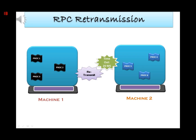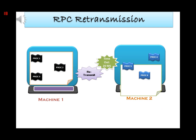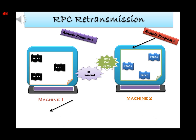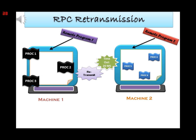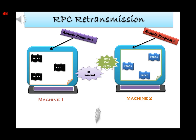Now let's discuss RPC retransmission. We will discuss retransmission strategy and the implementation of a simple timeout technique. One thing to note is that RPC retransmission never guarantees reliability. We have two machines — machine one and machine two — with a respective set of procedures, or remote programs. Both remote programs are sharing global data, so we have local procedure calls and remote procedure calls.